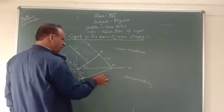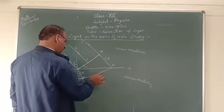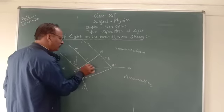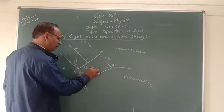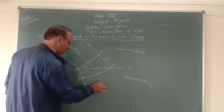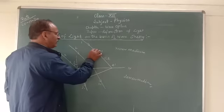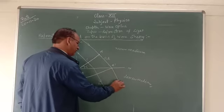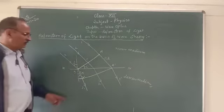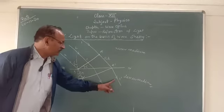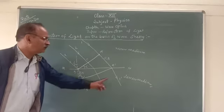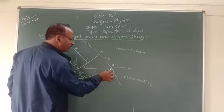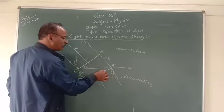The second wave moves up to this point in a straight line, and after that it becomes parallel to the third wave. After refraction, the first dash, second dash, and third dash rays become parallel to each other. They make angle r with the normal. This is r, and this is 90 minus r, because the rays are perpendicular to the wavefront.